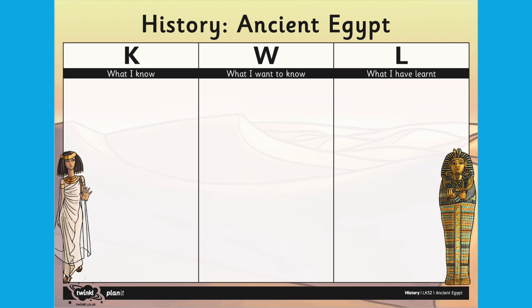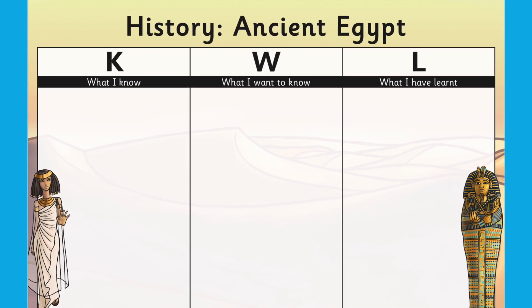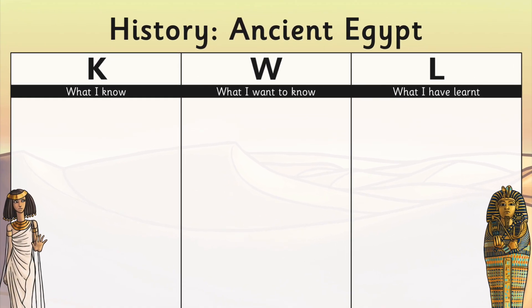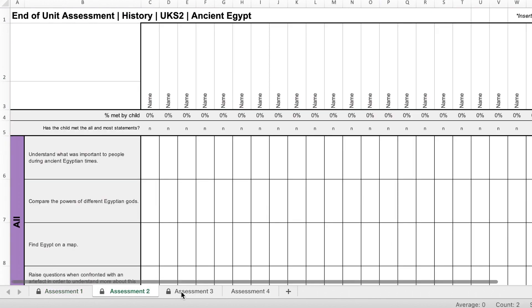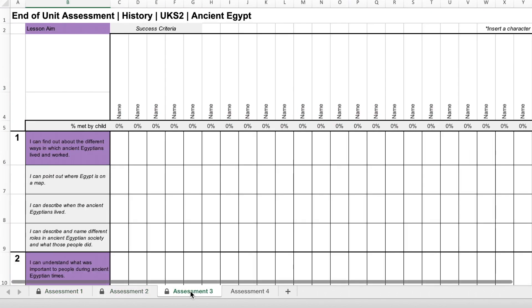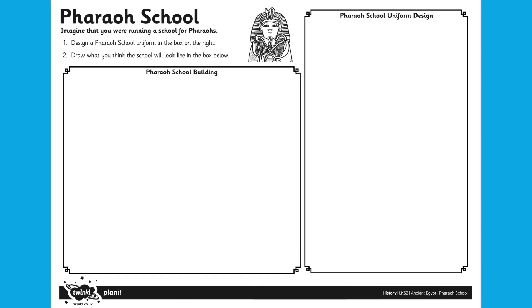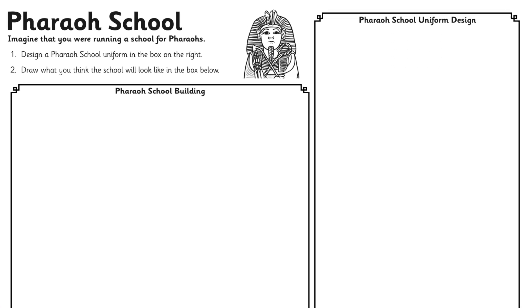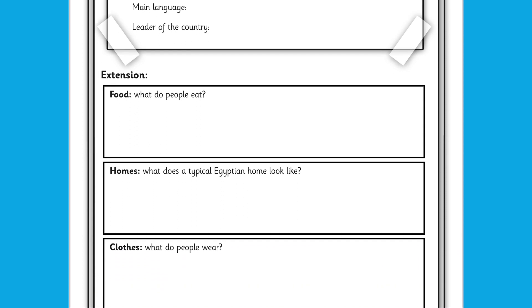In the pack there's also an assessment folder with a KWL grid for children to complete themselves for their self-assessment, as well as an assessment spreadsheet to help you with seeing the progress of your children throughout the topic. Finally, there are two home learning tasks in the pack that can easily be spread across the term for your children to engage with their learning from home.